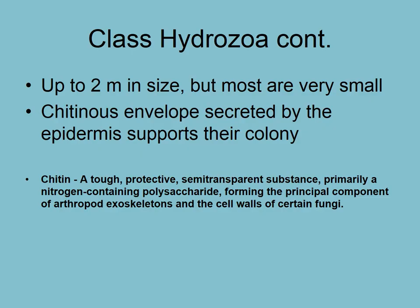They can be up to a couple of meters in size, but most of the hydrozoans are very small. They're found in freshwater and marine environments. If they have a colony, they often will have an envelope — a sheath like an apartment building that all the little polyps live within. It is made of something called chitin, which we'll talk about later with arthropod exoskeletons. The same materials are often used in different species to perform different functions.